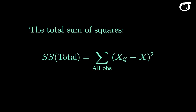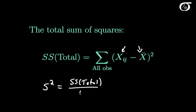Let's start with the total sum of squares. We're taking each observation, subtracting the overall mean, squaring it, and adding that up over all observations. You might notice that if we wanted the sample variance of all of our values, ignoring the fact that we had different groups, this would simply be the sum of squares total over n-1. So sum of squares total is related to the total variability of all of your data, ignoring the groups.